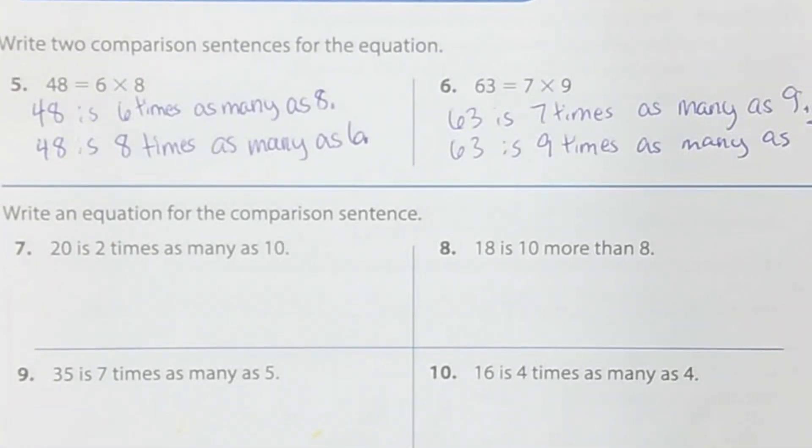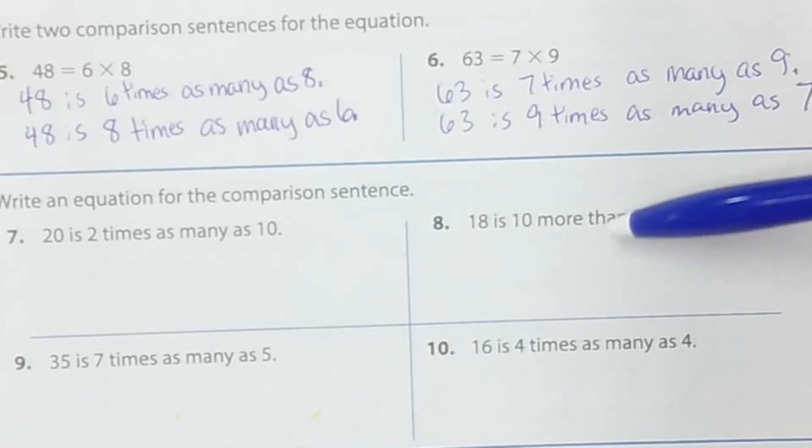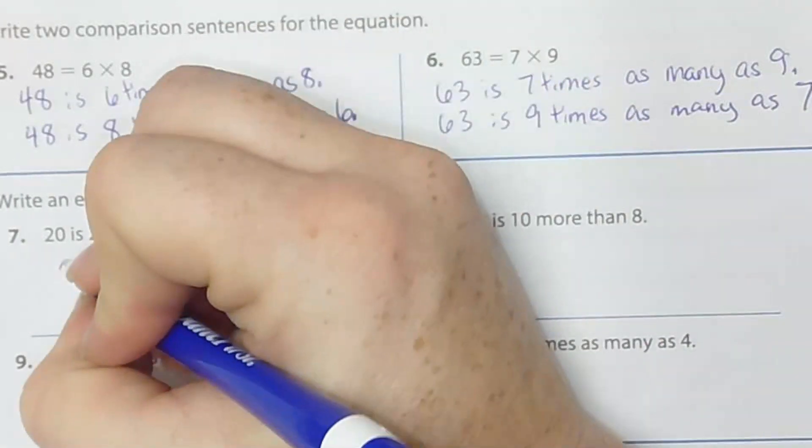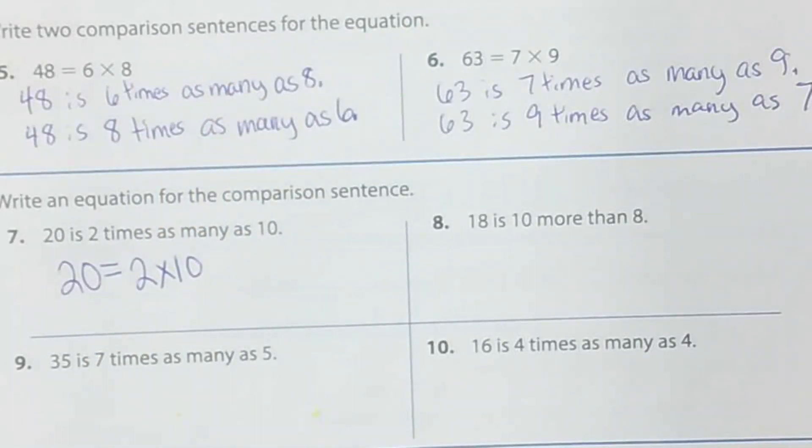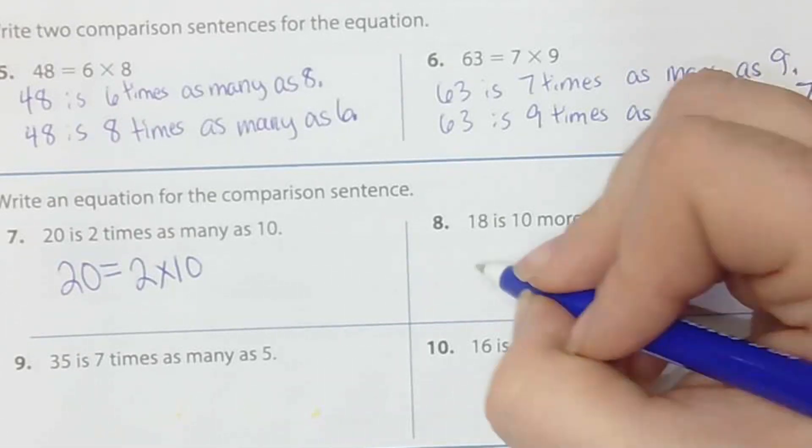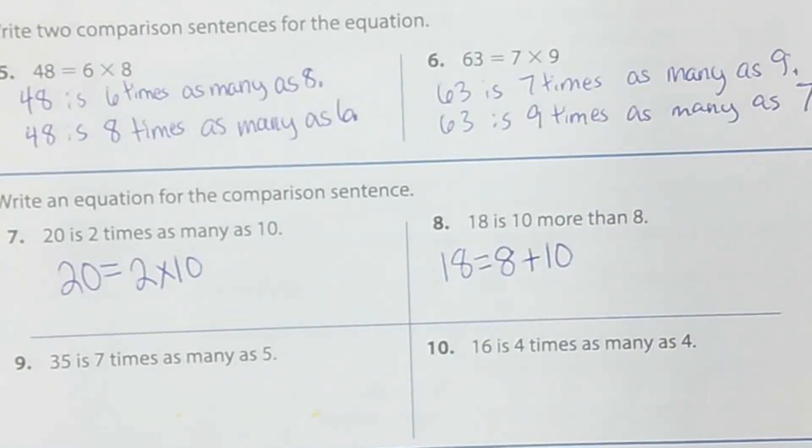Number 7 and 8, you're going to write out an equation for the comparisons in it. So, this time you're actually writing like you would typically see it in math without the words. 20 is 2 times as many as 10. You're going to write 20 equals 2 times 10. Number 8, 18 is 10 more than 8. So, I'm going to write 18 equals 8 plus 10. Remember when I saw as many as or times as many, I am multiplying. When I saw more than, I'm adding.